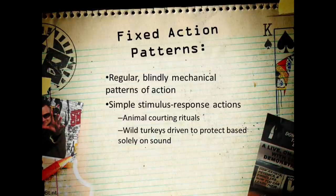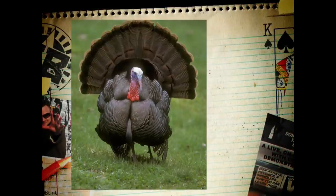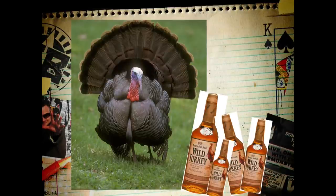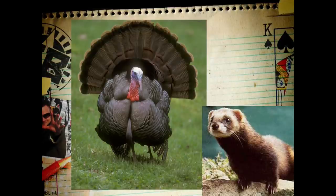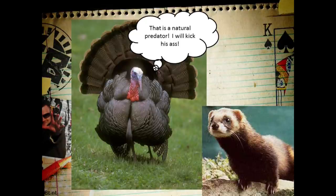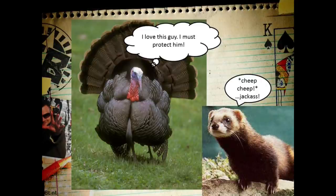Fixed action patterns are blindly mechanical stimulus-response patterns of action that we all fall into. The first study we'll talk about is on turkeys. Turkeys can recognize a friend from an enemy and solve some problems, but when it comes to taking care of their young, they just rely on a very simple fixed action pattern — they listen to the 'cheep cheep' sound of the young, and it instantly causes them to want to love and protect. Scientists grabbed a stuffed polecat, pulled it on a string right up to a turkey — first thing the turkey does is want to kick its ass — but then they pressed play on a tape recorder inside the polecat. The polecat made that cheep cheep sound and instantly the bird wanted to nurture and protect it.